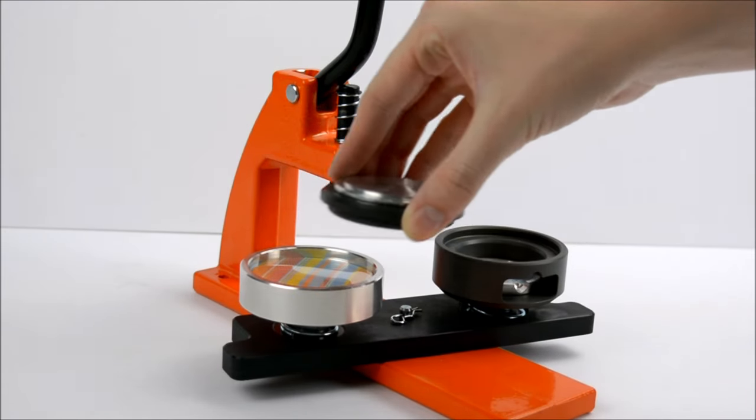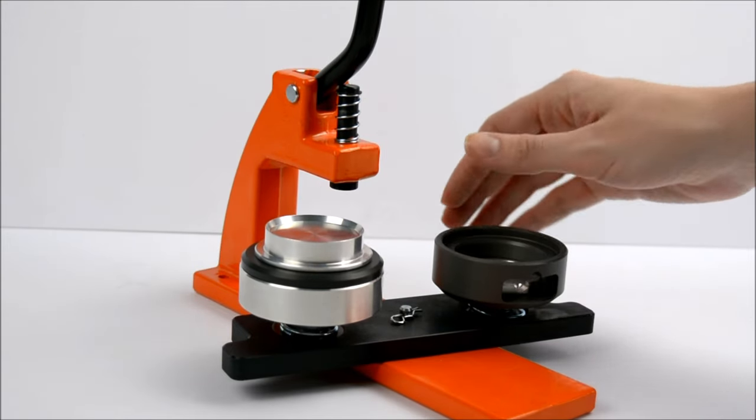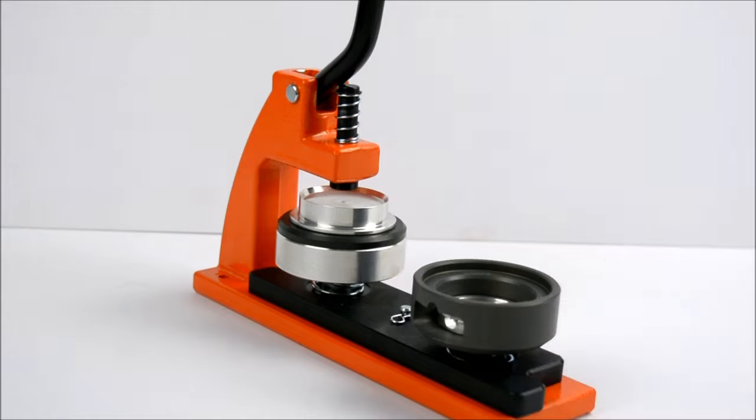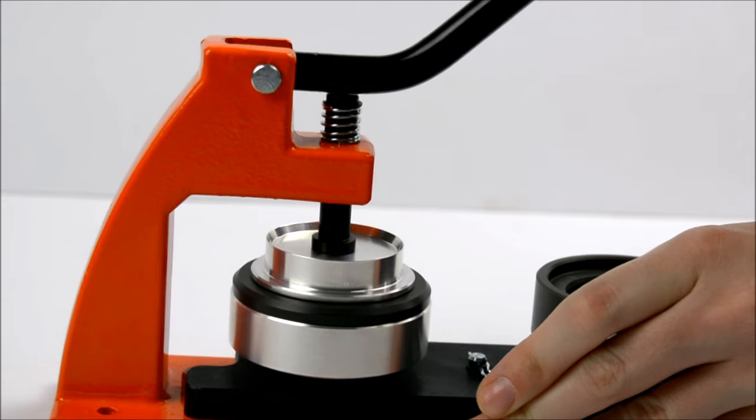Move the grey ring onto the first die and turn the centre punch so it looks like a top hat. Rotate the dies so the first die is directly under the handle and pull firmly down.